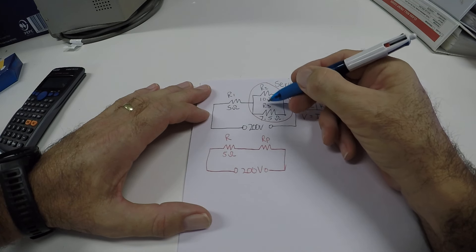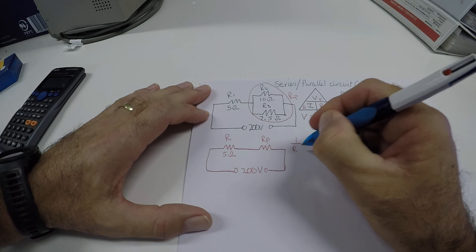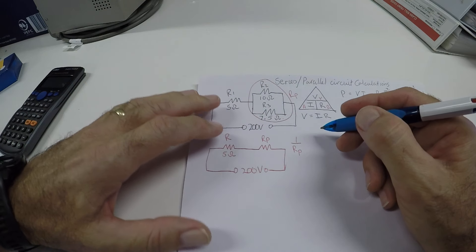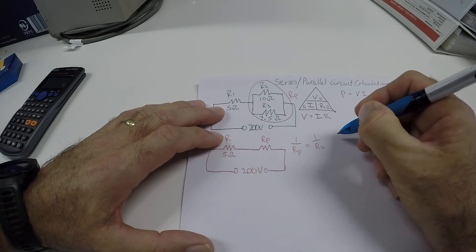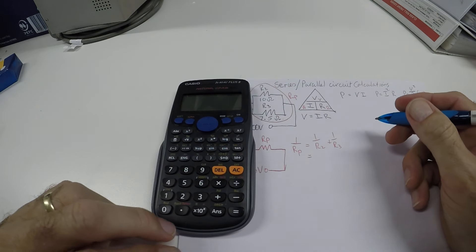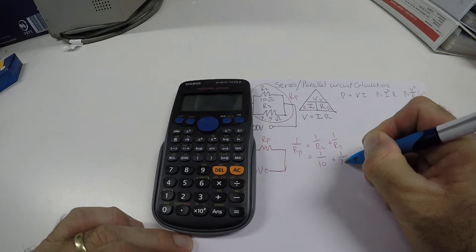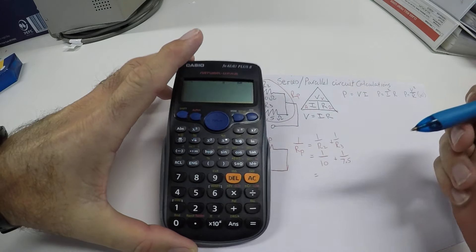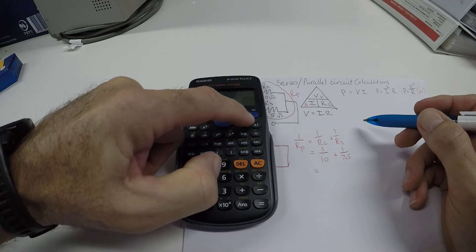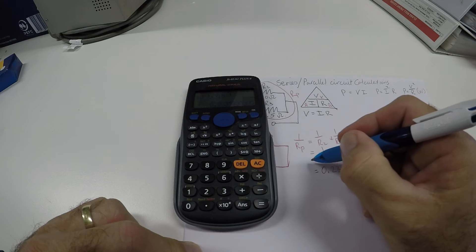So we know that when they are in parallel, the formula is 1 over Resistance Parallel. So I am going to go 1 over RP. Because remember I am not looking at this one yet, I am looking at this. And I want to get the value for these two together. So I go 1 over R2 plus 1 over R3. So in my calculator, I will go 1 over the 10 plus 1 over 7.5. Remember in the calculator, I am going to look for the x minus 1, which does the 1 over. So I go 10, 1 over, plus 7.5, 1 over, which will give me a value of 0.233 reoccurring.